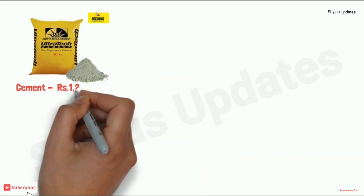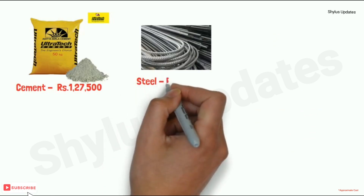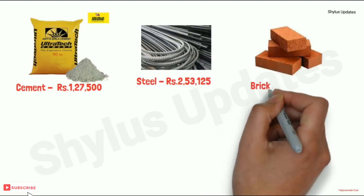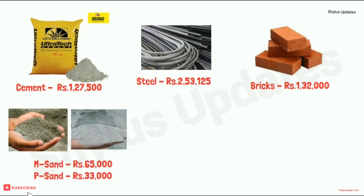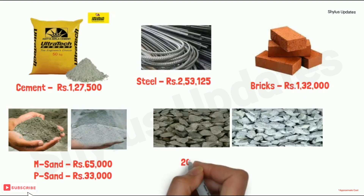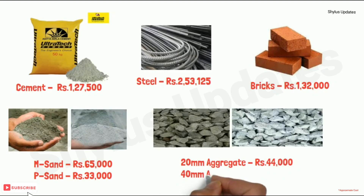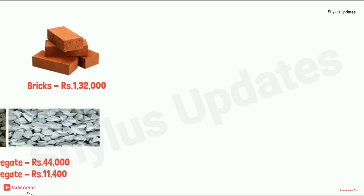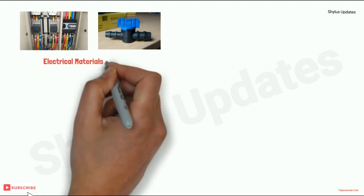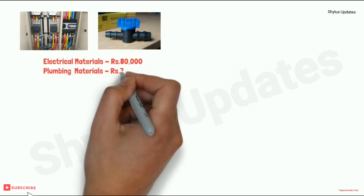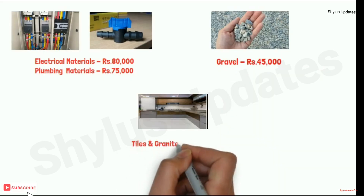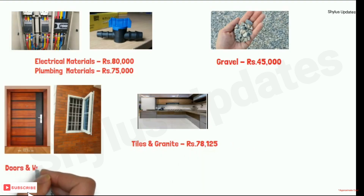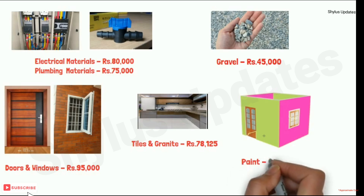Material cost summary: Cement rupees 1,27,500; Steel rupees 2,53,125; Bricks rupees 1,32,000; M Sand rupees 65,000; P Sand rupees 33,000; 20mm aggregate rupees 44,000; 40mm aggregate rupees 11,400; Electrical materials rupees 80,000; Plumbing materials rupees 75,000; Gravel rupees 45,000; Tiles and granite rupees 78,125; Doors and windows rupees 95,000; Paint rupees 60,000.